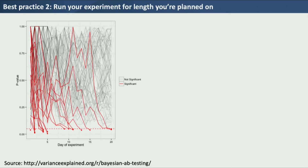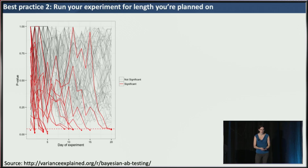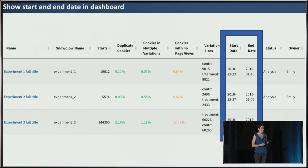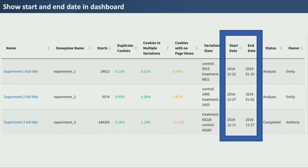The second guideline is to run the experiment for the length you've planned on. This graph shows that if you simulate thousands of null experiments and check every day whether the p-value is less than 0.05 and stop the experiment at that point, you'd get an over 20% false positive rate — a huge increase. You really want to do the power analysis, set the time of your experiment, and stick to it. That's why we added a start date and an end date to the health checks. It can be really tempting for a stakeholder to message saying, hey, I saw this metric went up, why don't we just launch it? But now they see the end date is not for another couple days, and they know they're supposed to follow this best practice.